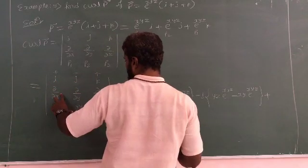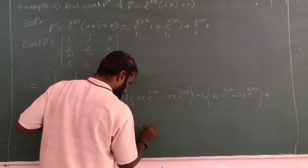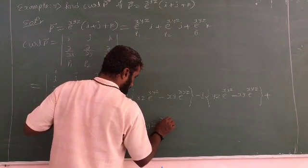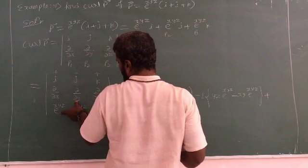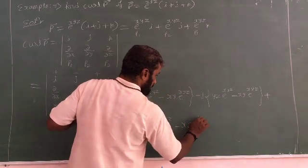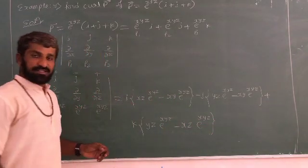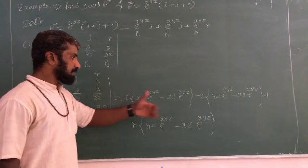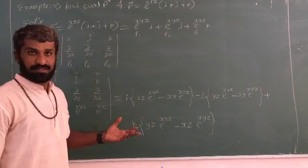Plus k. Differentiating with respect to x, with respect to y, so it is z·e^(xyz). Now simplify this—e^(xyz) is common—so that is xyz.